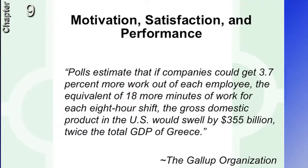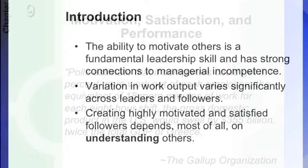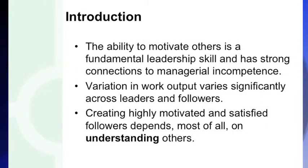The Gallup organization in the United States is probably one of the largest research organizations around statistics, psychometry, and testing. They have made a statement in their research that if companies in the United States could get 3.7% more work out of each employee — the equivalent of essentially 18 minutes of work for each eight-hour shift — then the gross domestic product in the United States would swell by 355 billion, twice the GDP of Greece. So the ability to motivate others is a fundamental leadership skill and has strong connections to managerial incompetence.